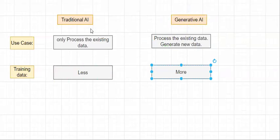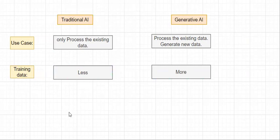Traditional AI models are trained with less data. For prediction tasks, up to 100 images is enough — if I want to identify whether an image is of me, providing just 1 to 10 images to the Traditional AI is sufficient for it to make that identification.